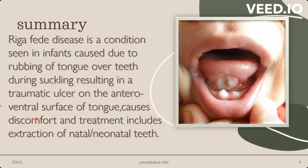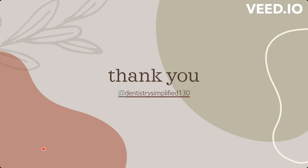To summarize, Riga-Fede disease or syndrome is a condition seen in infants caused due to rubbing of the tongue over the teeth during suckling, resulting in a traumatic ulcer on the anteroventral surface of the tongue. It causes discomfort to the child, and treatment includes rounding of the edges, application of soothing gels, or extraction of natal or neonatal teeth.